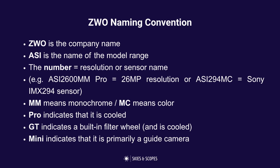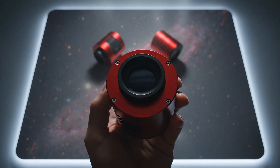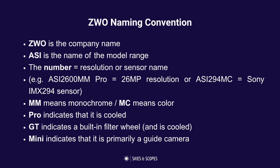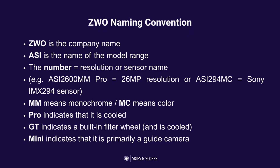It's worth touching on the ZWO naming convention because it can be a bit confusing. ZWO is the company name; ASI is just the model range. The number indicates either the resolution of the sensor or the sensor name — so the 2600MM Pro is a 26 megapixel camera, while the 294 is named after the Sony IMX 294 sensor it uses. MM means monochrome, MC means color. Pro means it's cooled, which is what you want for deep sky imaging with long exposures. GT and Mini indicate a built-in filter wheel or a guide camera respectively.